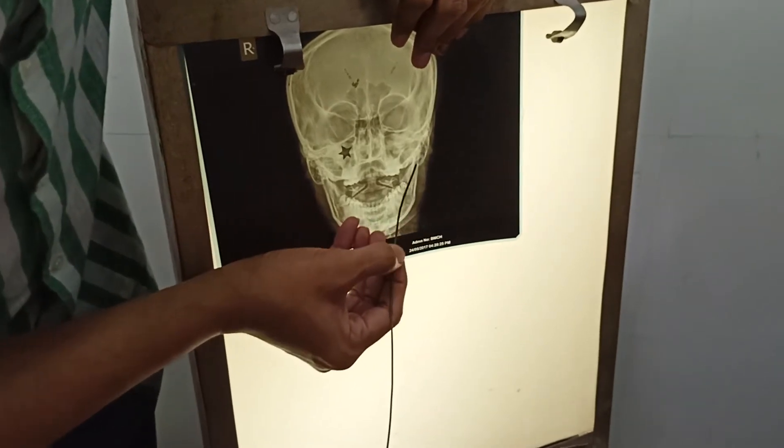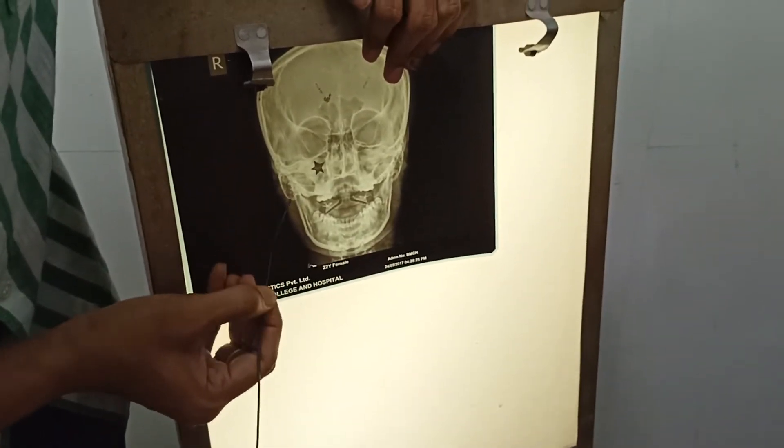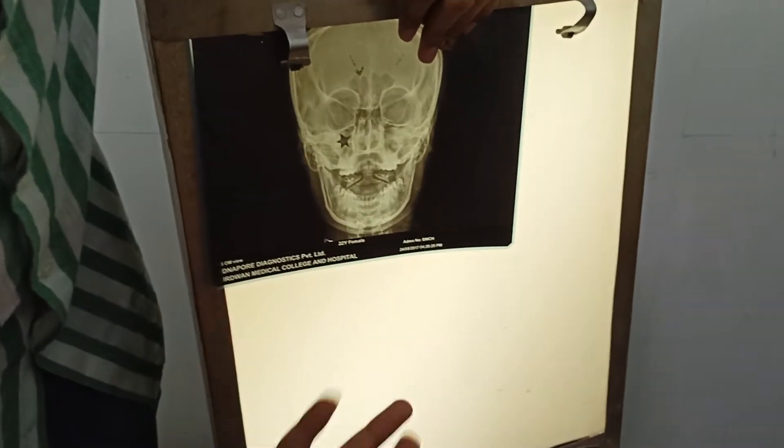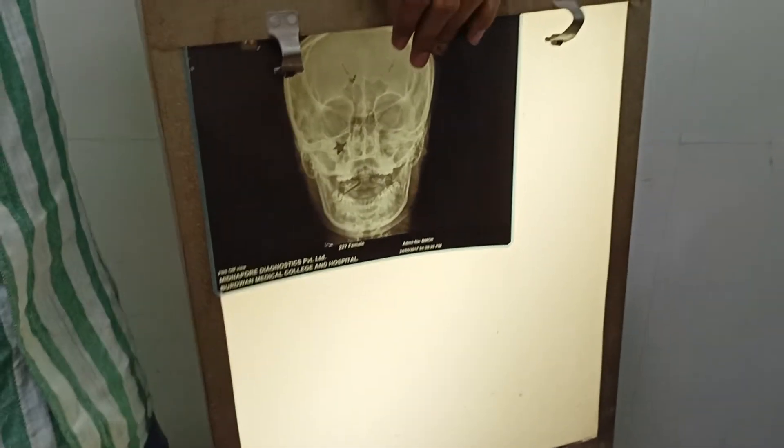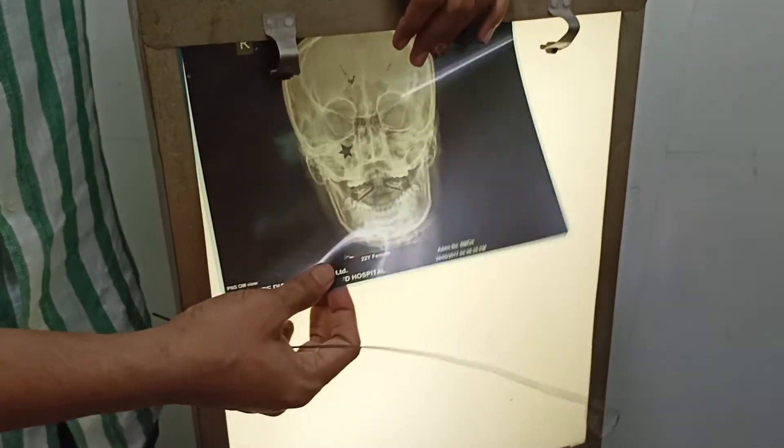And what are these? Probably the parotid gland. Yeah, exactly, parotid glands. Obviously, this is the mandible. That's all, nothing is there. So parotid gland is present, right.